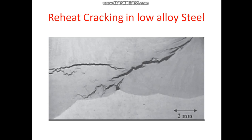In this picture you can see a crack that develops after post-weld heat treatment, also called PWHT cracking, reheat cracking, or stress relaxation cracking. It occurs particularly in the heat affected zone, and sometimes also at the interface of the HAZ and weld metal, but most of the time in the HAZ.